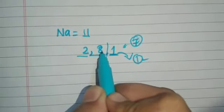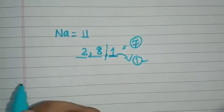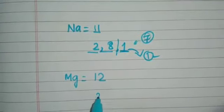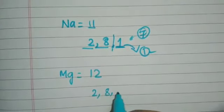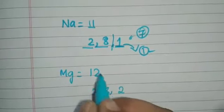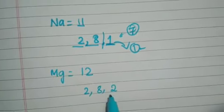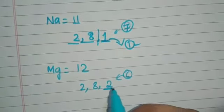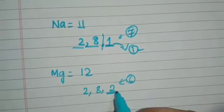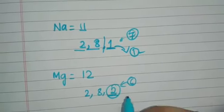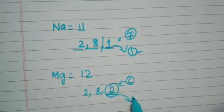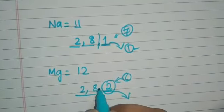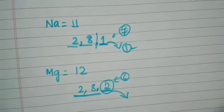Let us take magnesium. Magnesium has atomic number 12 — K shell has 2, L shell has 8, and M shell has 2. The outermost shell is not completely filled. It would require six more electrons, but no other element is ready to donate six electrons. So this atom donates its two outermost electrons to become stable and reach a noble gas configuration.